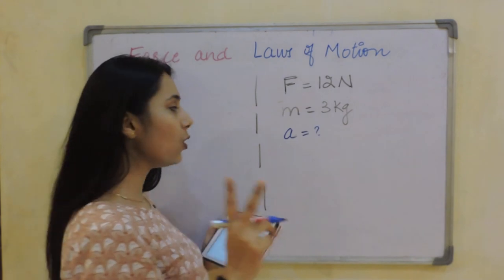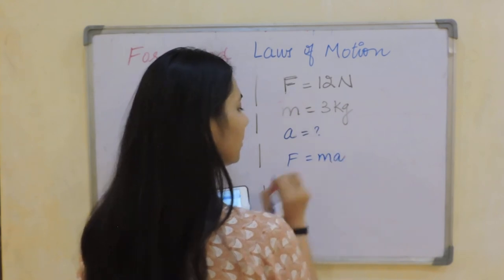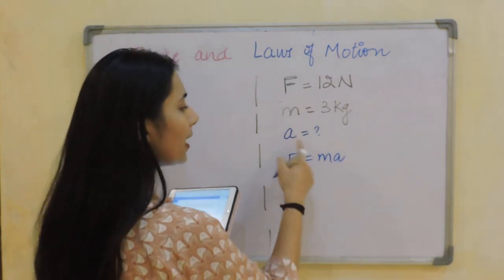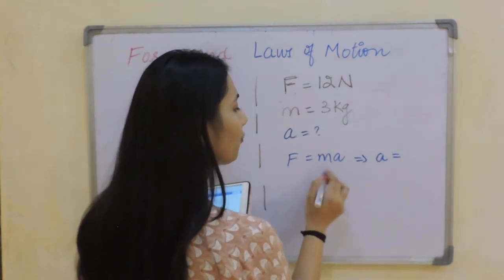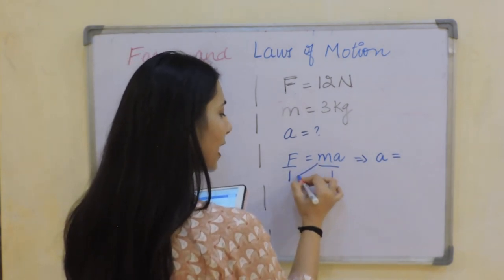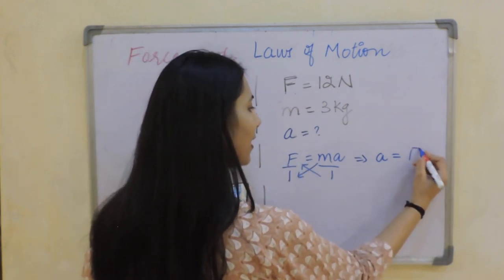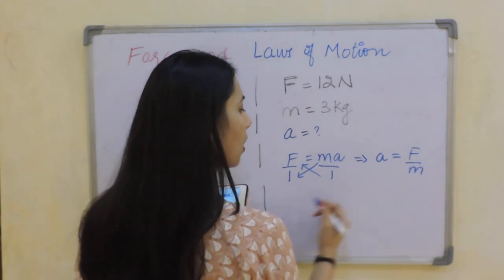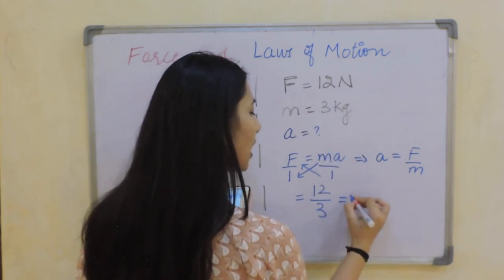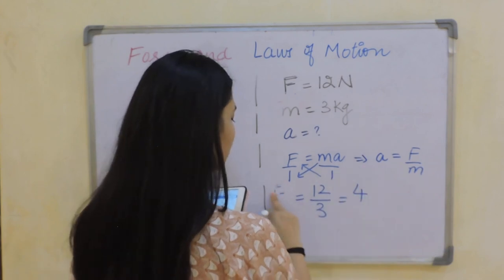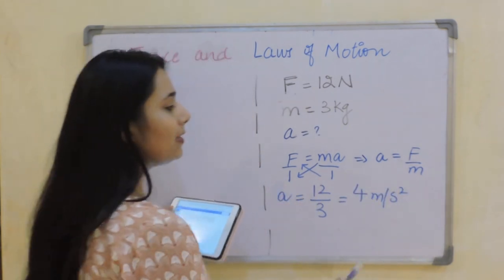According to Newton's second law, force is equal to mass into acceleration. I need to find A, I have F and M. So A equals F divided by M. The value of F is 12, the value of M is 3, so the answer will be 4. The unit of acceleration is meter per second square, so the acceleration is 4 m/s². Never forget the unit — it is very important.